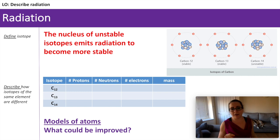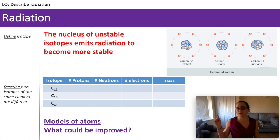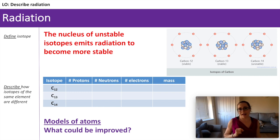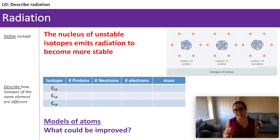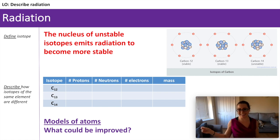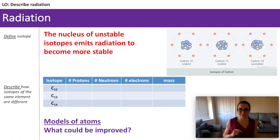Just to link to chemistry before we go any further — a fundamental skill. Can you work out the number of protons, neutrons, and electrons in each of these isotopes of carbon? Can you also work out the mass and see how that links to the number on the isotope? This is the best model I could find on the internet but I'm not 100% happy with it. Why might I not be happy with it? How could this model be improved? Pause the video to fill in the table.